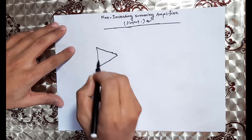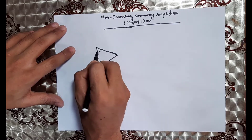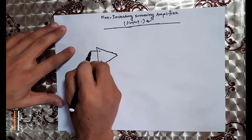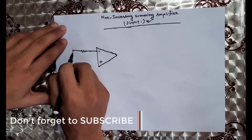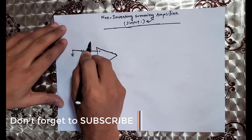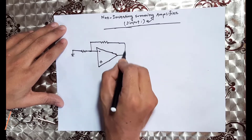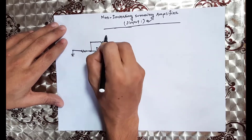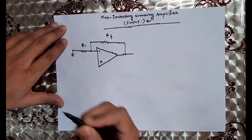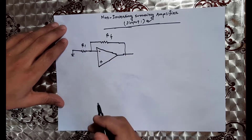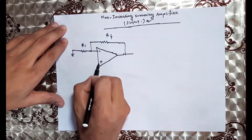The op-amp has a negative feedback option, so we have negative feedback. We have feedback resistance Rf and R1. Then we have the non-inverting input section.